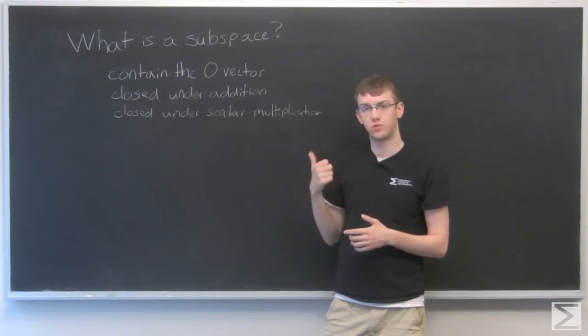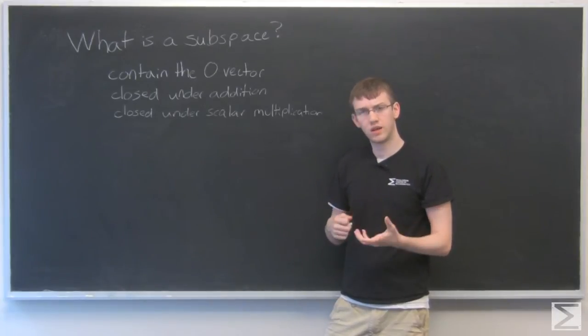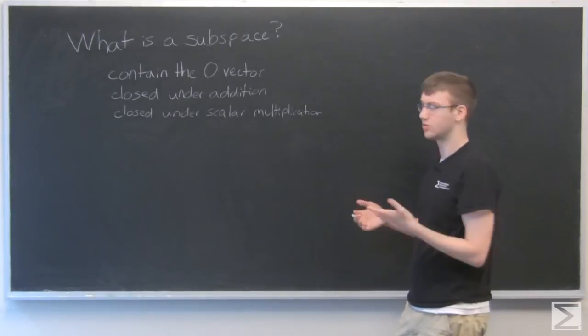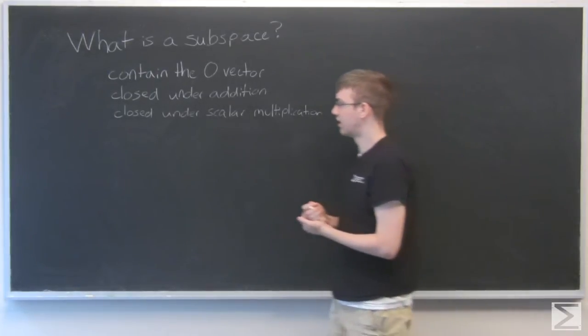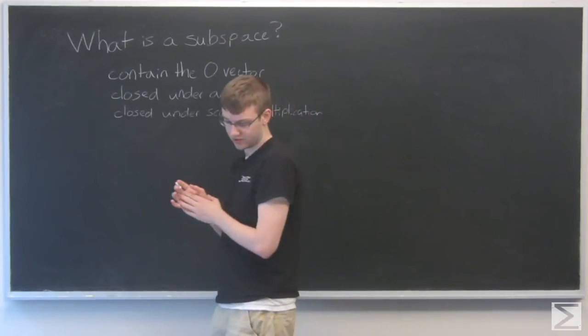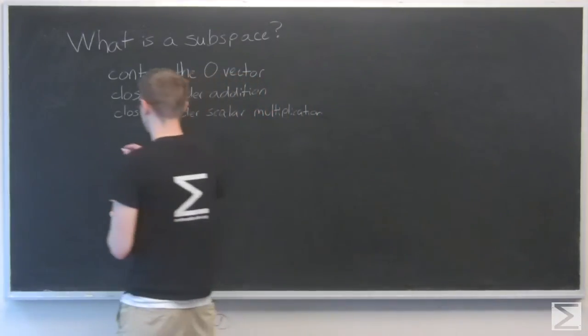So how do we form subspaces? There are three major ways that we can talk about or that you'll often see used in problems and such. Well, I guess two. I'm kind of splitting up the first one. The first is that if you just have the span of a single vector.